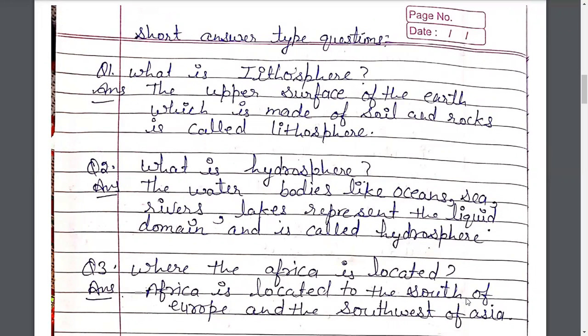Where is Africa located? Africa ka sthan kahan hai? Africa is located to the south of Europe and the south west of Asia. Africa Europe ke dakshin mein aur Asia ke dakshin-pashchim mein sthit hai. What is isthmus? Isthmus kise kehte hai? A narrow strip of land joining two land masses is called isthmus. Do bhoomi khandon ko jodne wali sankri patti ko isthmus kaha jata hai.